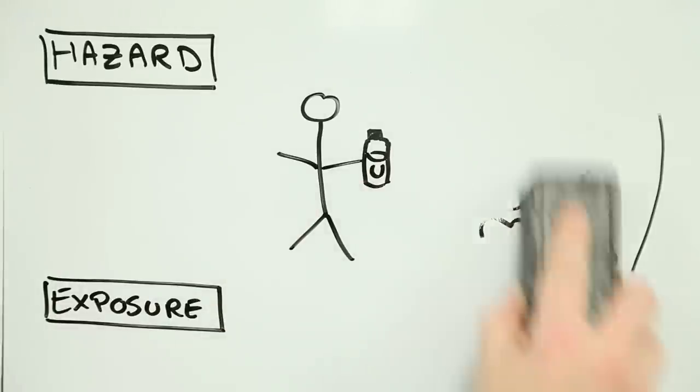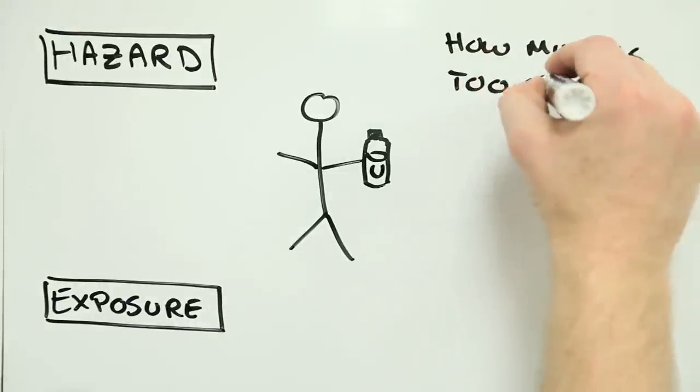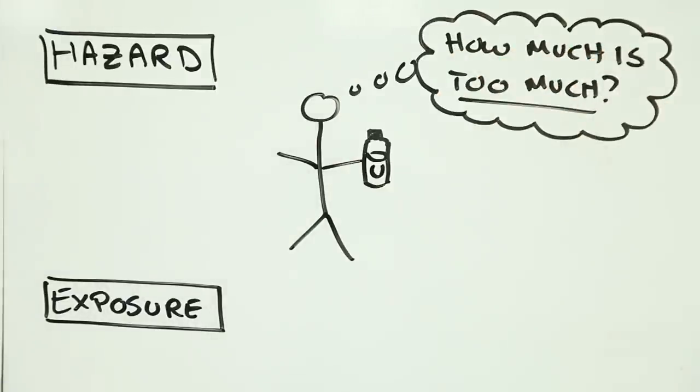We're getting close to being able to estimate risk at this point, but there's still something missing. We need to know how much unobtanium causes what sort of effect.